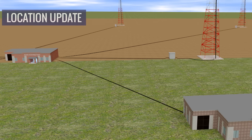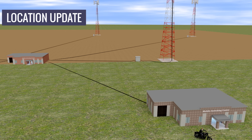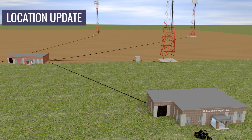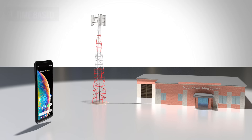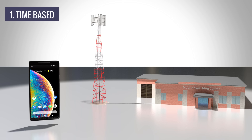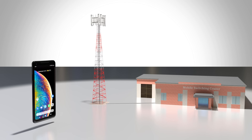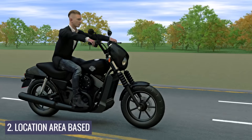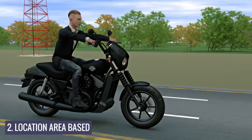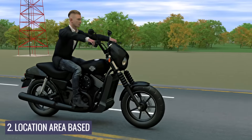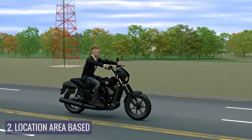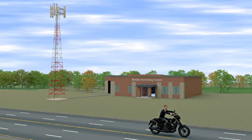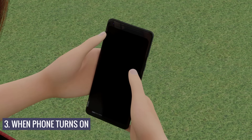To understand in which cell location a subscriber is within the MSC area, the MSC uses a few techniques. One way is to update the subscriber location after a certain period. When the phone crosses a predefined number of towers, the location update is done again. The last one of these is when the phone is turned on.